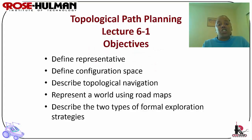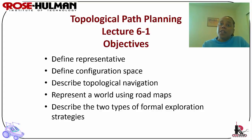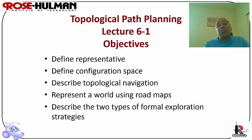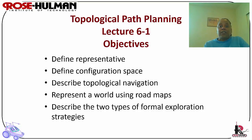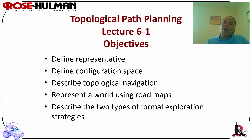The objectives of today's lecture are to define representation as it applies to path planning, to define configuration space, as well as topological navigation in more detail, a couple of different ways to do that, how to represent a world using road maps as well as cell decomposition — there are three of those: exact, approximate, and adaptive. In addition, we will also discuss two types of formal exploration strategies.